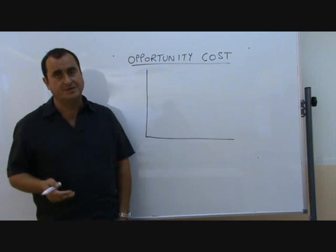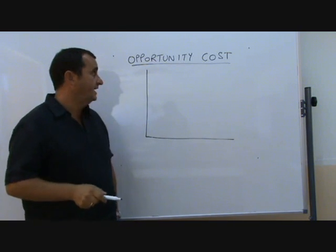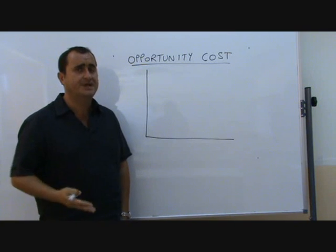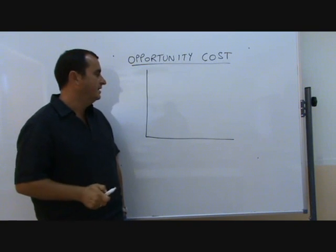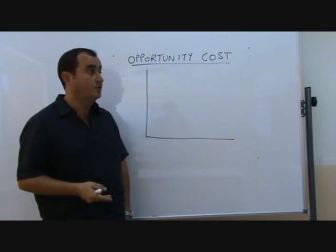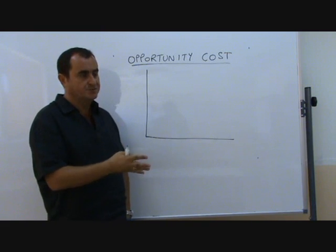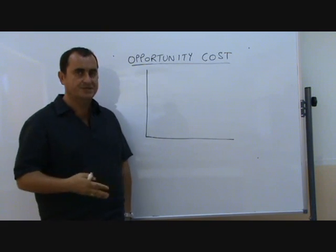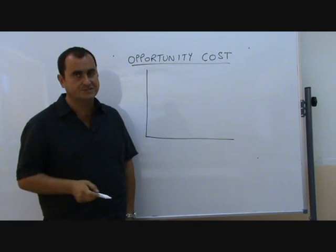Opportunity cost is a concept we meet very early in the economic syllabus. It's about choices and what's given up when a choice is made. If a government, business, or individual makes a choice between two options, the option they don't choose is the opportunity cost of the decision.